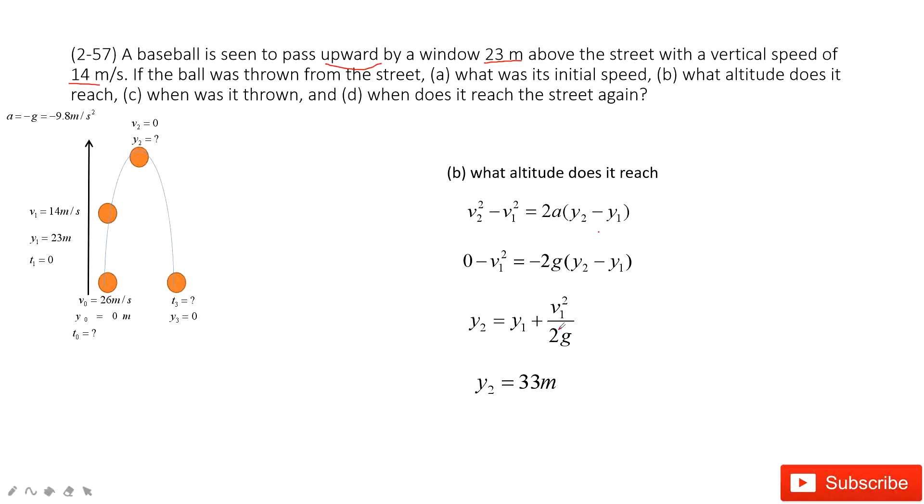The third one. When was it thrown? So execute the time t0. Then we consider the t1 is 0 second. So now we can find the t0. So we can say we know v1. We know the v0. We know acceleration.